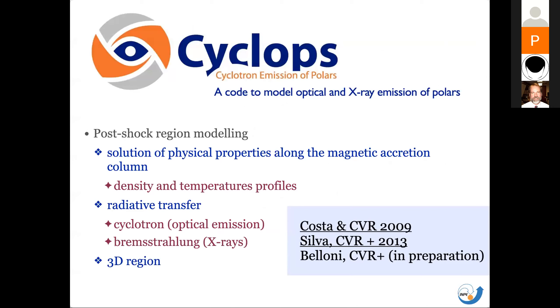So how to interpret this data? We have developed a numerical code. It's a 3D radiative transfer code. We can calculate the cyclotron emission as well as the bremsstrahlung emission. So you can fit and model the optical emission and the X-rays. And recently, we have introduced a correct physical calculation of the density and temperature profiles in the post-shock region. It's a very important ingredient to understand the emission of these systems.